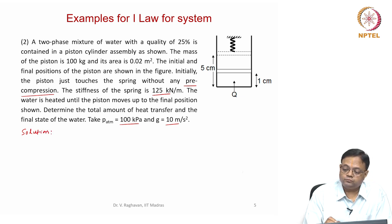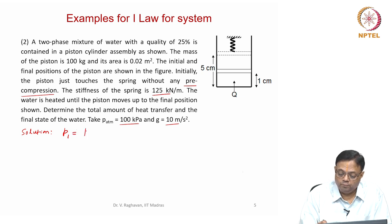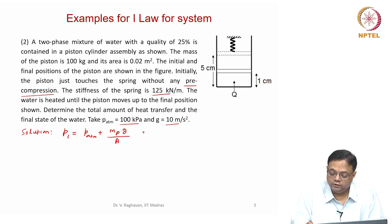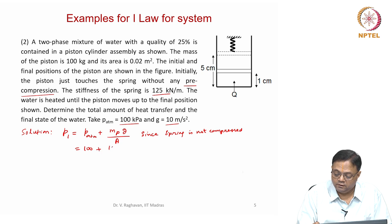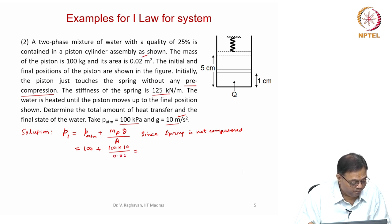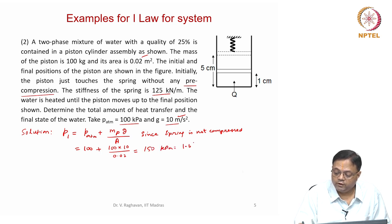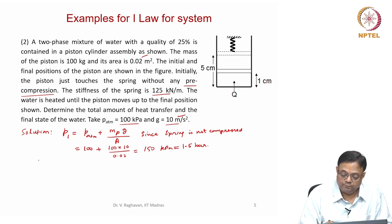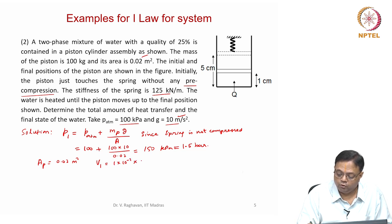For this problem: P1 = P_atm + (m_piston × g) / A. Since the spring is not compressed initially: P1 = 100 + (100 × 10) / 0.02 = 150 kilopascals or 1.5 bar. The area of cross-section is given as 0.02 m², so V1 = 1 × 10⁻² × 0.02 = 0.0002 m³.